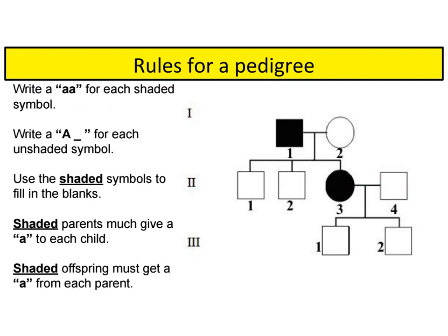The purpose of a pedigree in genetics is to find the genotypes of all of the individuals in the family. I'm going to model how to use the rules to solve the pedigree. We know that shaded symbols have the recessive phenotype. In order to have the recessive phenotype, they also have to be homozygous recessive. So the first thing I'm going to do is put the homozygous recessive genotype on each of those symbols. Everyone else has an unshaded symbol, showing the dominant phenotype, so they have at least one dominant allele. The second allele is unknown, so we're going to put a little dash to indicate what we need to discover.